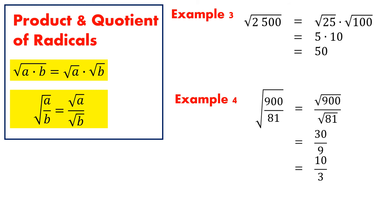The same thing works for division. The square root of A divided by B is equal to the quotient of square root of A and square root of B. We could take the quotient that is under a radical and split it up into two radicals, or we could take two radicals that are divided and combine them into a single fraction under one radical.